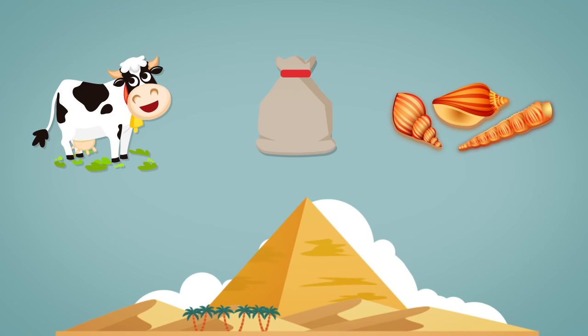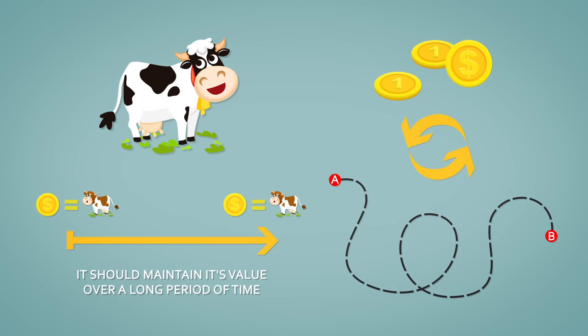Cattle, for example, wasn't divisible, interchangeable, or easily portable. It also didn't maintain its value over a long period of time.